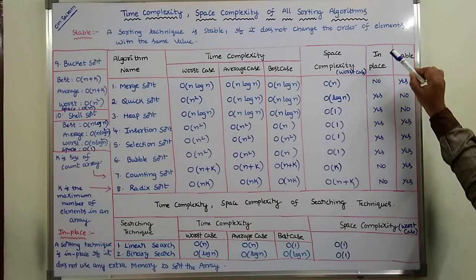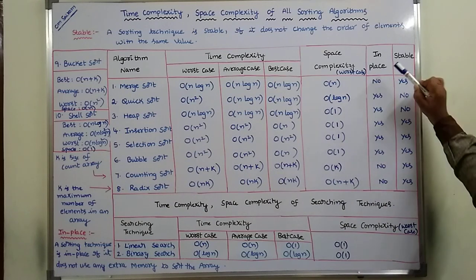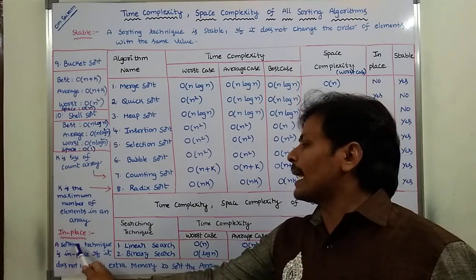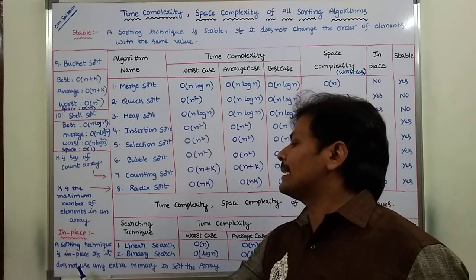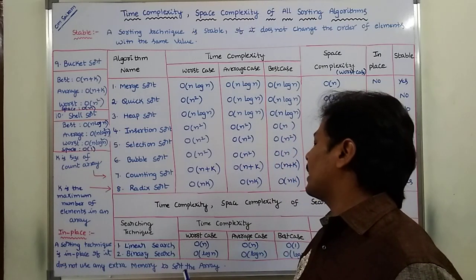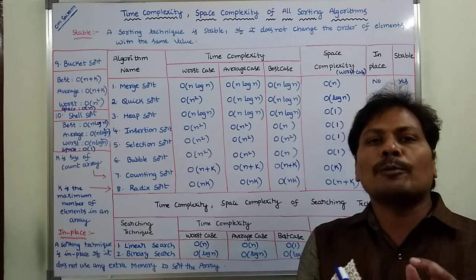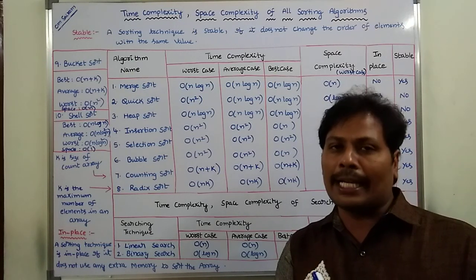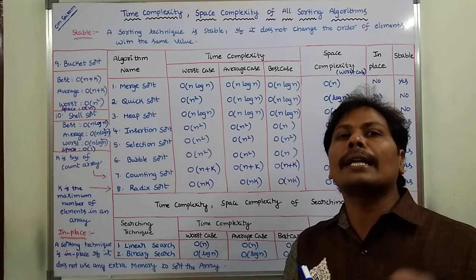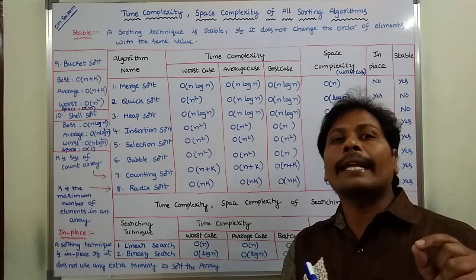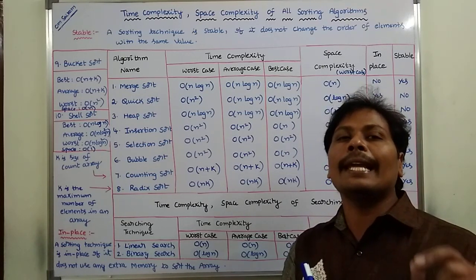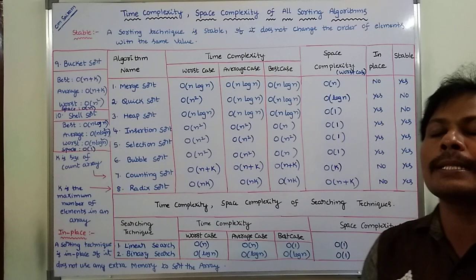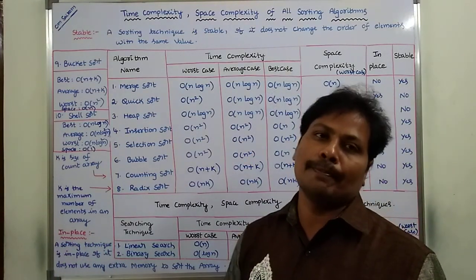Next, how this Sorting Algorithm is an In-Place Algorithm. In-Place Algorithm means a Sorting Technique is In-Place if it does not use any Extra Memory to Sort the Array. Suppose we are taking an Array that contains N number of elements — to sort that N number of elements, this Sorting Algorithm does not use any Extra Memory, so hence we can say that Sorting Algorithm is called an In-Place Sorting Algorithm.